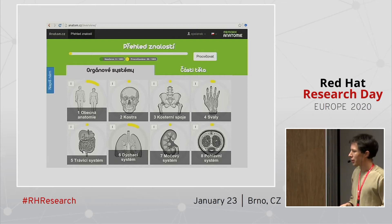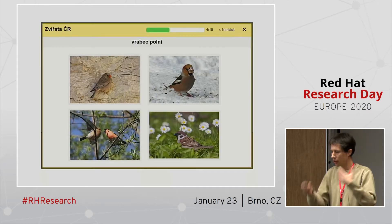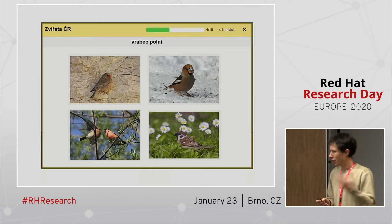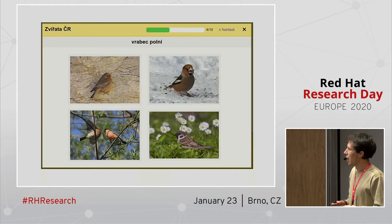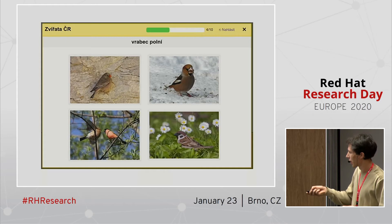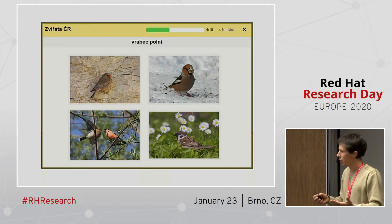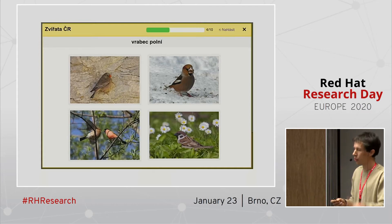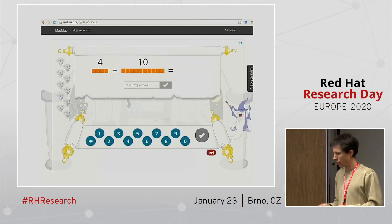We have similar systems in other domains. For example, this is anatomy practice for medical students, which works in a similar fashion to the geography one. Here's some practice of animals. An interesting research question is how to construct distractors in multiple choice questions — the wrong answers should be competitive, kind of similar to the right answer, but not too confusing. At the moment, we are experimenting with multi-armed bandits for this problem.